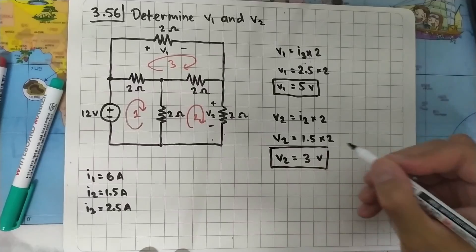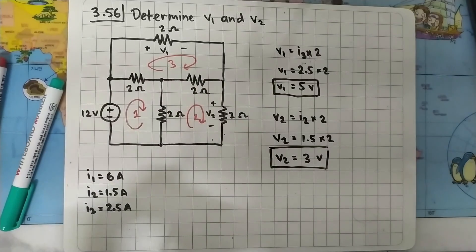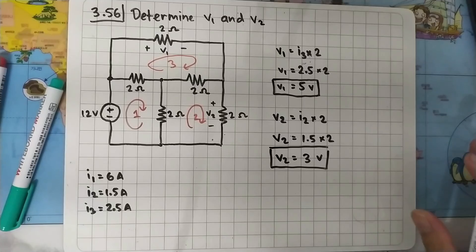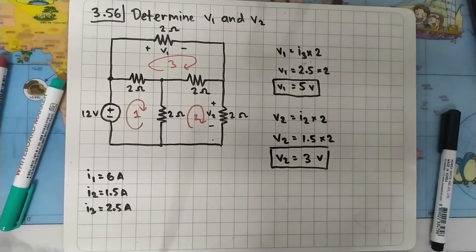So our final answers are V1 = 5 volts and V2 = 3 volts. Hopefully no mistakes were made in the calculations. Thank you for watching and don't forget to subscribe.